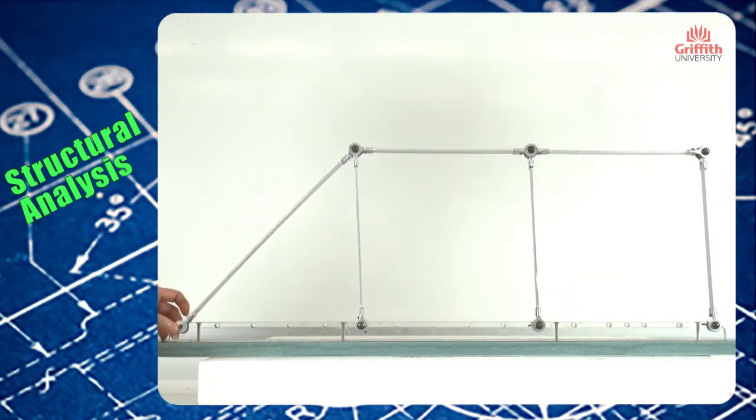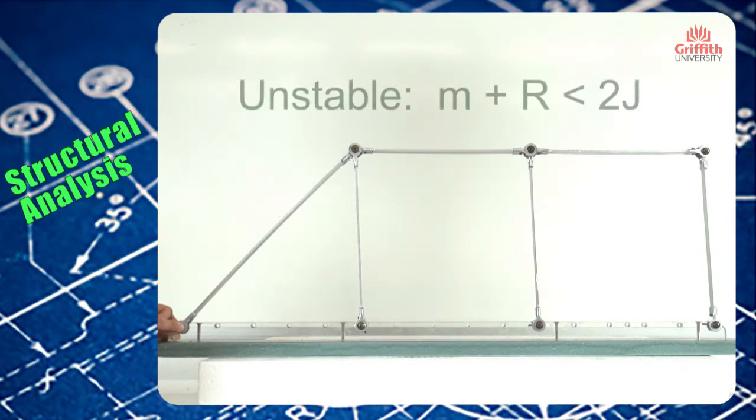Now if we use n plus r and compare with 2j, we find that the number of reactions is reduced by one because this becomes a roller. So we have a situation where n plus r is less than 2j, therefore the system is unstable.